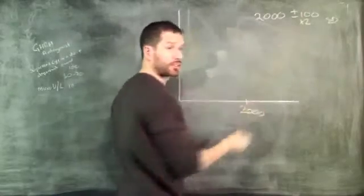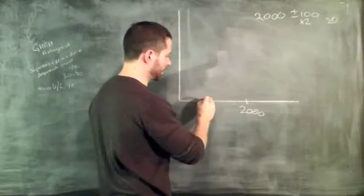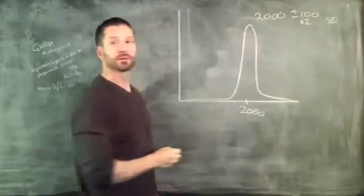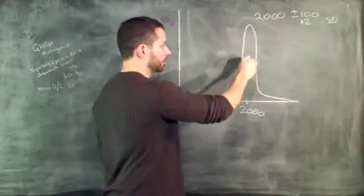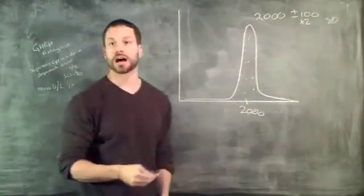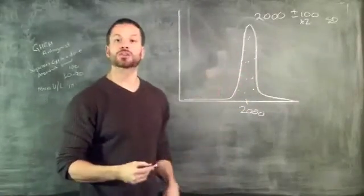if I tell you it's plus or minus 100, what I'm telling you is that by and large most of the people in my trial ate numbers somewhere around 2,000. This would actually be a fairly well controlled trial.